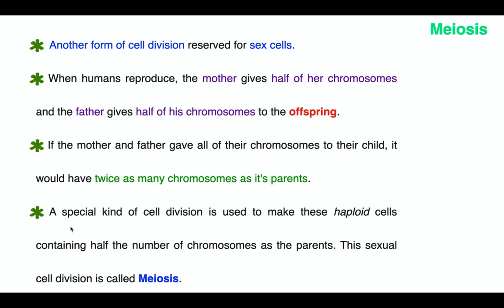Meiosis is a cell division necessary for producing gametes or sex cells. For a new offspring, the mother gives half her chromosomes and the father gives half his, so n plus n equals 2n. If both parents gave a complete set (2n each), the offspring would have four times the chromosomes — nature cannot allow that. That is why before fertilization, reproductive cells are produced which are haploid, containing one set of chromosomes, expressed as n.